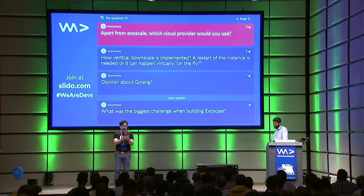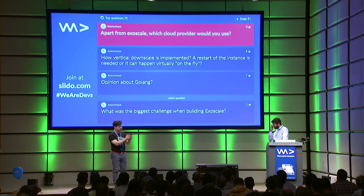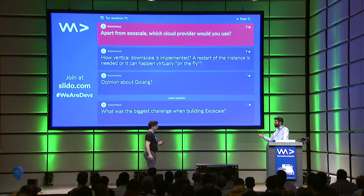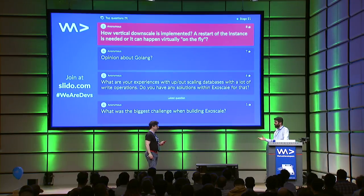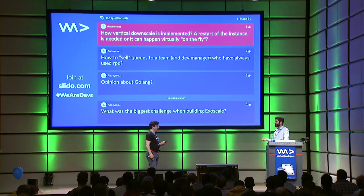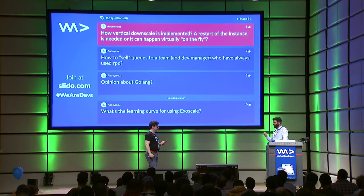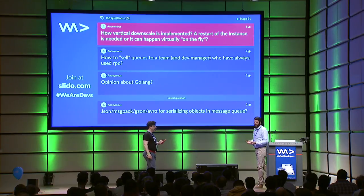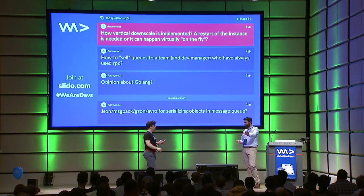Q: How is vertical downscale implemented — do you have to restart the instance or can it happen on the fly? A: From the service perspective, a stop of the instance is needed, mostly because operating systems in general deal very badly with vertical scaling operations. If you add or remove RAM from a system, there are no OSes that correctly know how to handle this, which is why we chose to force you into stopping the machine and restarting it.